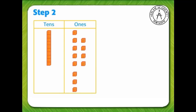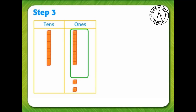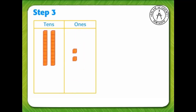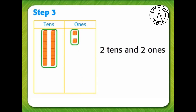Let's circle 10 ones. Now regroup 10 ones as 1 ten and move to the tens column. There are two tens and two ones, so 19 plus 3 equals 22.